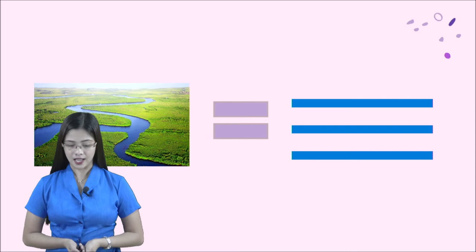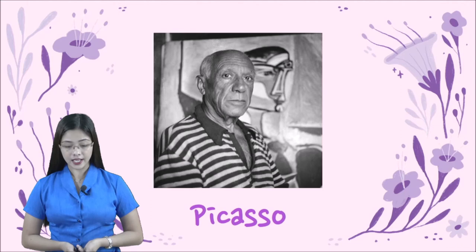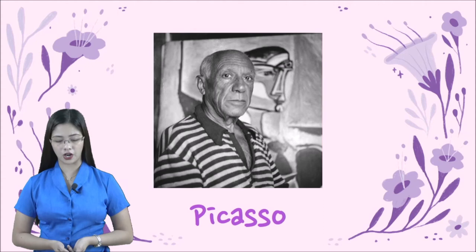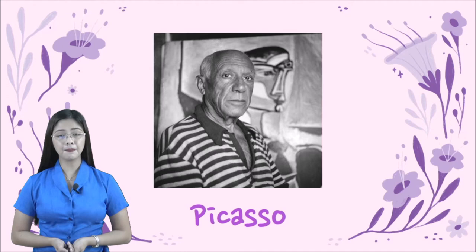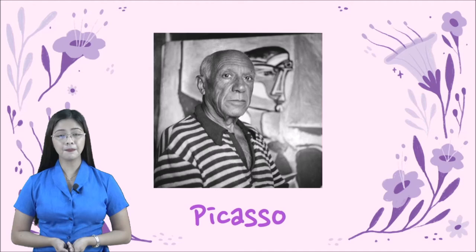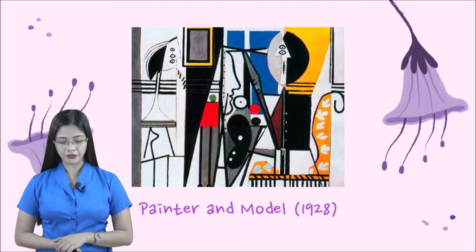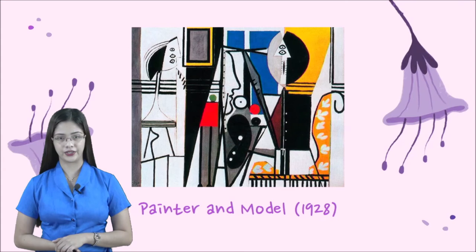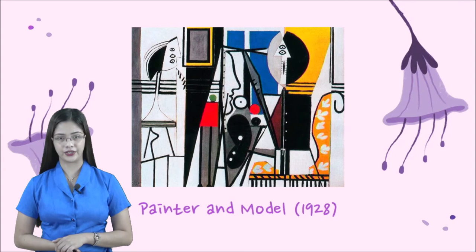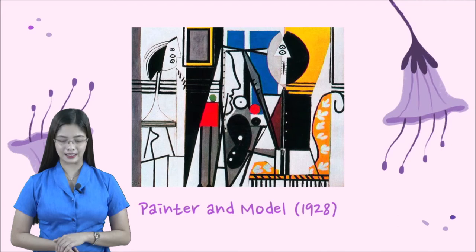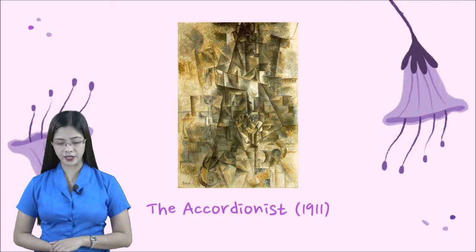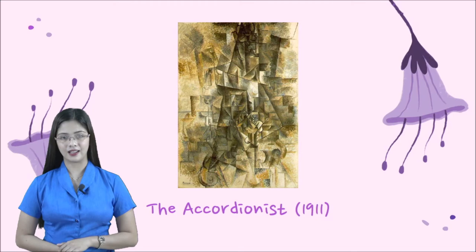Picasso is a famous abstract artist and he is a Spanish artist. Some of his famous works include The Painter and Model in 1928, which can be interpreted as a refutation of the principle of recording a visual impression. The next one is The Accordionist in 1911, which depicted a man playing an accordion as indicated by the title.